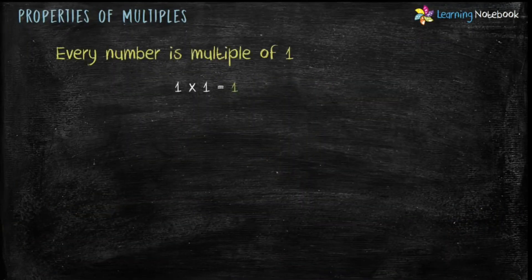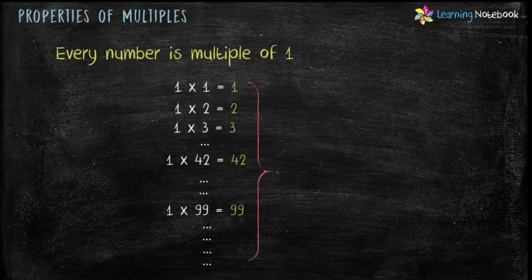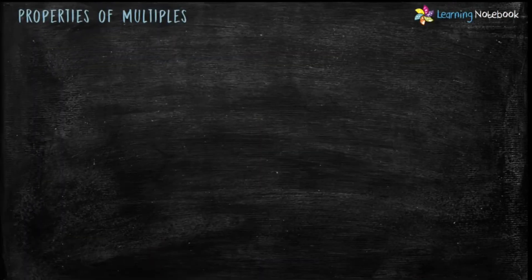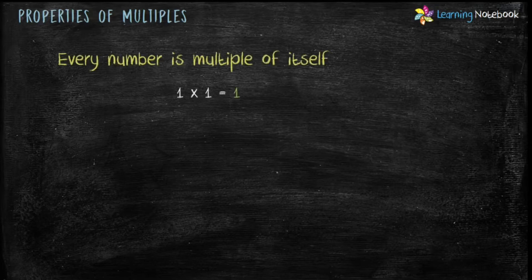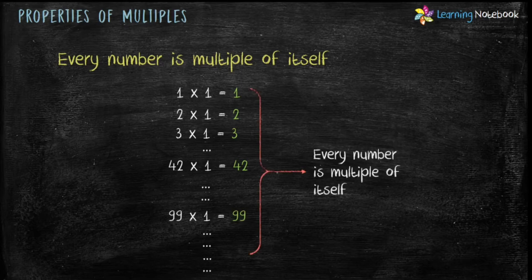The first property is every number is a multiple of one. Take any number — 1, 2, 3, 20, 21, 42, 63, or any other number — it will be a multiple of one. The second property is every number is a multiple of itself. Any number, be it 1, 2, 3, 42, or any other number, it will be a multiple of itself.